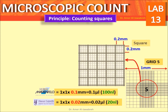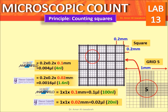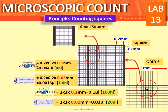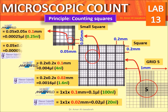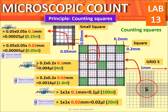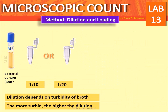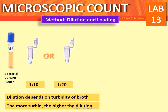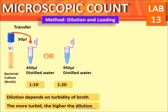Principle counting squares: grid 5 has a volume of 100 nanoliters in the Marine Field chamber and about 20 nanoliters in the Petroff-Hauser chamber. Each of the 16 smaller squares has a volume of 0.25 nanoliters in the Marine Field chamber but 0.05 nanoliters in the Petroff-Hauser chamber. The 5 green squares are used for counting bacteria. For the method — dilution and loading — mix broth well, then prepare a 1-to-10 or 1-to-20 dilution depending on turbidity. Use 50 microliters of broth into 450 or 950 microliters of distilled water.